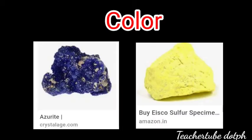The next physical property is color — it is simply whatever you can see with your naked eye. However, this property can be tricky because some minerals change their color when in powdered form. Here are two minerals: azurite, the deep blue color mineral, will not change its color — it is always deep blue. The other is sulfur, which is always yellow in color.